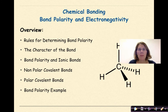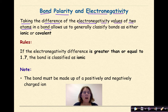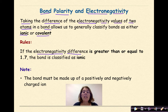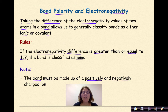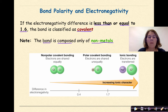Let's start by talking about bond polarity and electronegativity. Taking the difference of the electronegativity values of two atoms in a bond allows us to generally classify bonds as either ionic or covalent. There are rules we can follow, though these can vary by textbook. If the electronegativity difference is greater than or equal to 1.7, the bond is classified as ionic — but the bond must be made up of positively and negatively charged ions. If the electronegativity difference is less than or equal to 1.6, the bond is classified as covalent, composed of only nonmetal atoms.